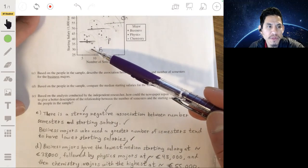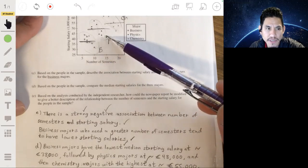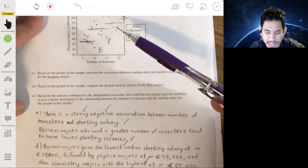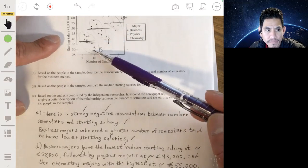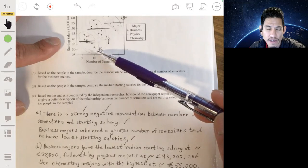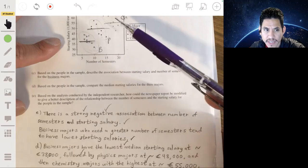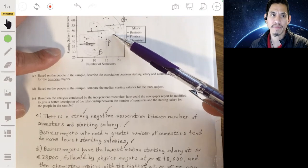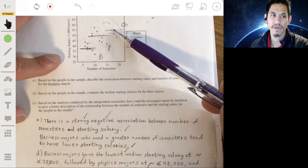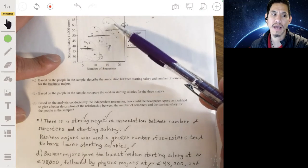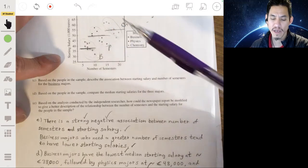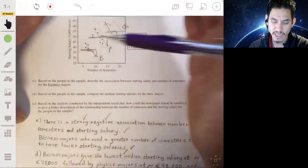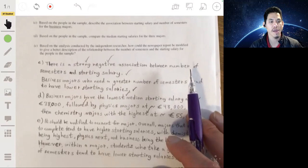That what really affects your starting salary is the major. Like business is in third place followed by physics and chemistry. And that actually, in fact, the more semesters you take to complete your degree, it seems you have a lower starting salary. It's just that the chemistry majors overall have higher salaries, they just take a longer time to complete their major. So that's why they tend to be the highest in terms of, they seem to have the highest number of semesters and the highest starting salaries. But again, within each group, it seems that the more semesters you take, the lower your starting salary tends to be.